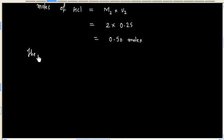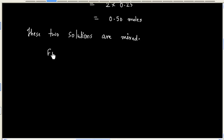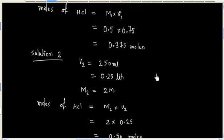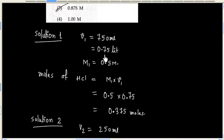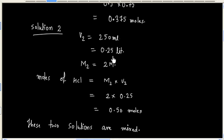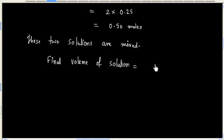Now these two solutions are mixed. We can calculate final volume of solution. That is 0.75 litre plus 0.25 litre, that is 1 litre.